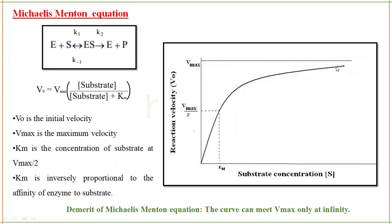When the enzyme is saturated with substrate, that is what we call Vmax — the maximum velocity the enzyme can reach because it is saturated with substrate. Even if you increase the substrate concentration, the enzyme does not have any vacant active site. Therefore, even though you increase substrate concentration, Vmax will not increase; it will saturate. Vmax is the maximum velocity which an enzyme can reach when it is completely saturated with substrate in all its active sites.